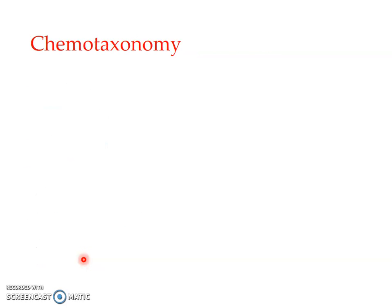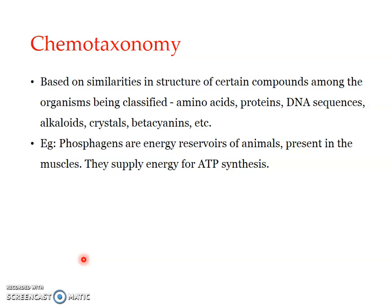The first one is chemotaxonomy. As the name suggests, it is with respect to chemicals. The classification is based on biochemicals. We study the different chemical compounds present in a set of organisms and then compare their structure, and based upon the similarities we group the species into a single group. The compounds included are mainly amino acids, proteins, and DNA sequences. In the case of plants, it could also be alkaloids and betacyanins.